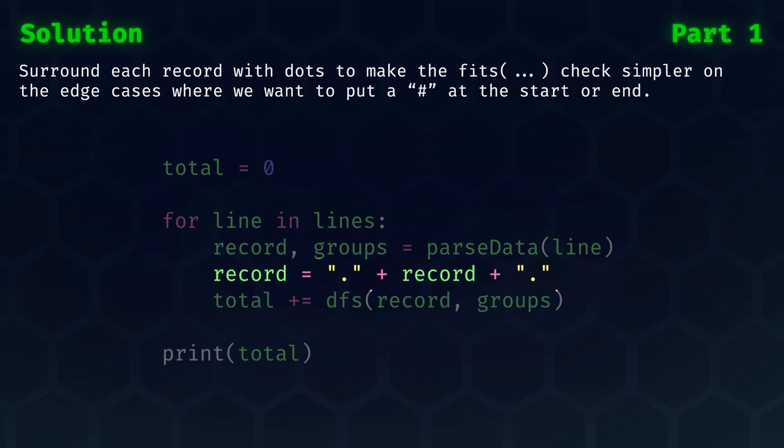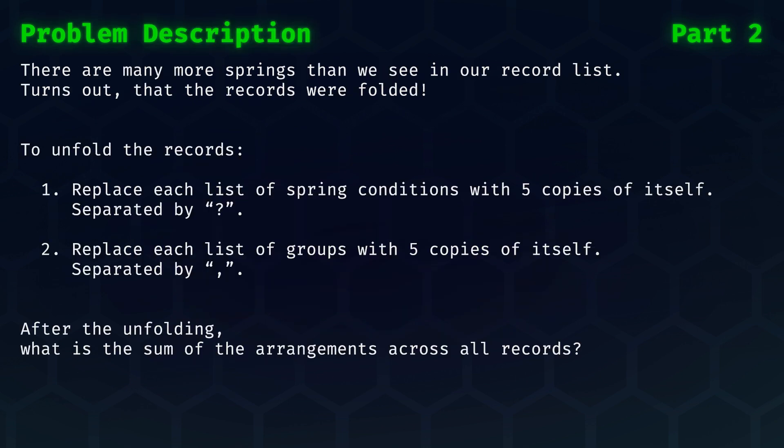Let's recurse into part two. In typical advent of code fashion, there's more to our input. There are many more springs than we see in our record list. Turns out that the records themselves were folded. To unfold the records, first we replace each list of spring conditions with five copies of itself, separated by question marks. Then secondly, we replace each list of groups with five copies of itself, separated by commas. After the unfolding, what is the sum of the arrangements across all records? Since this problem is just a bigger version of part one, let's move straight into the solution.